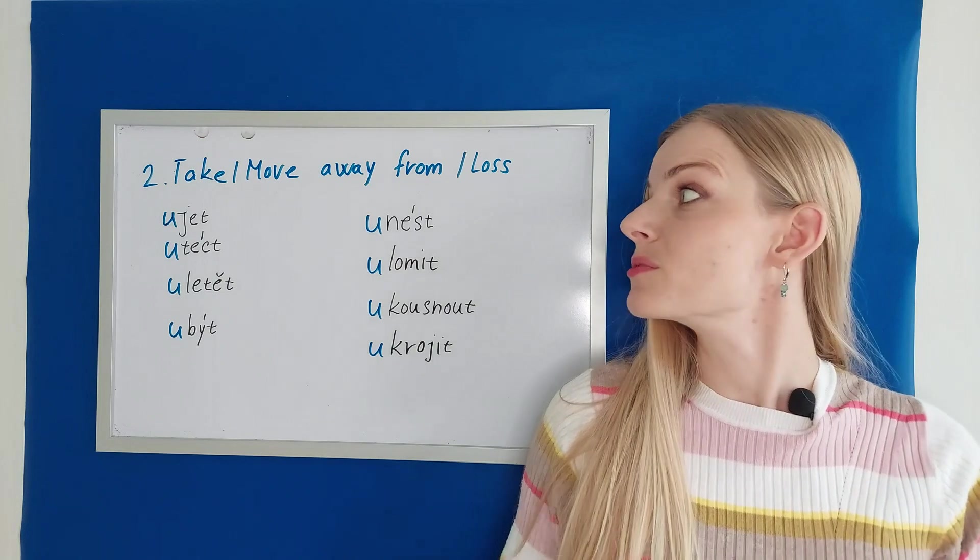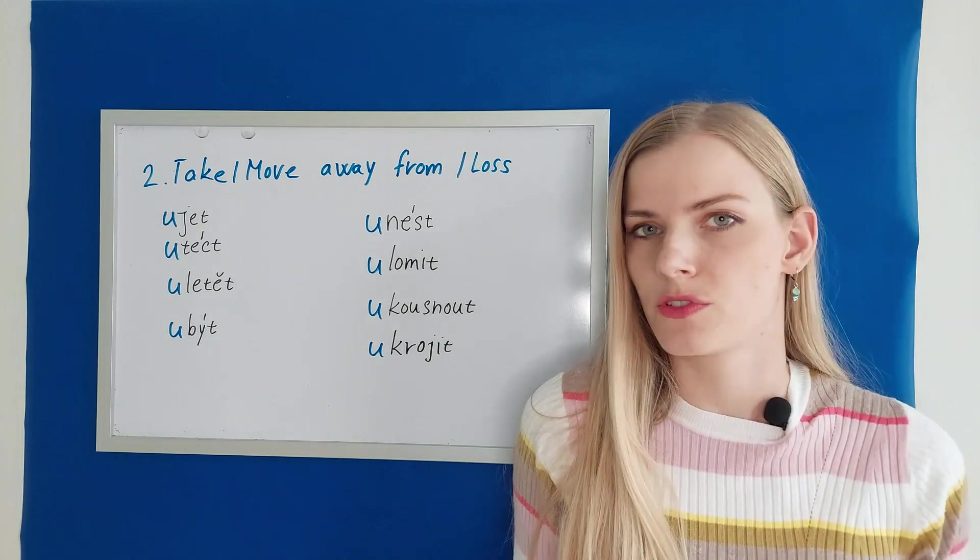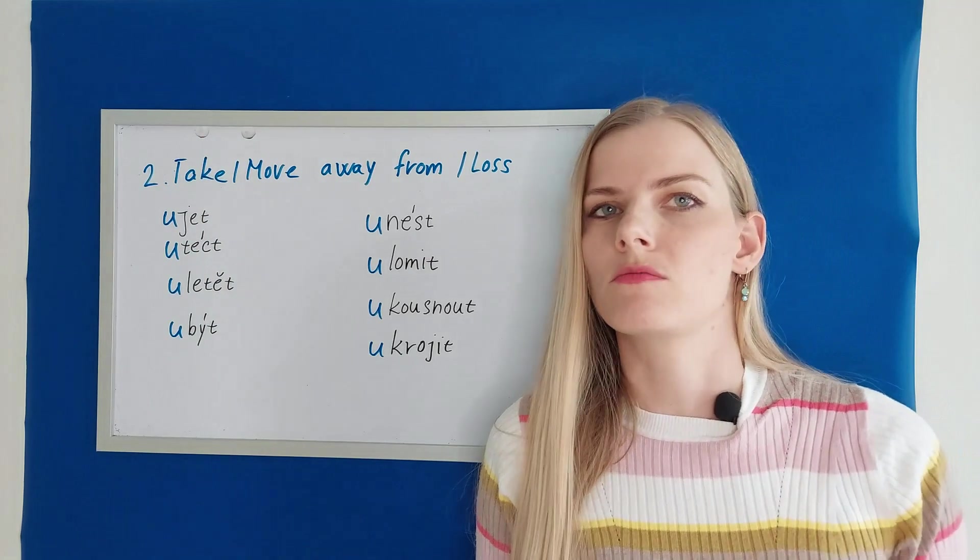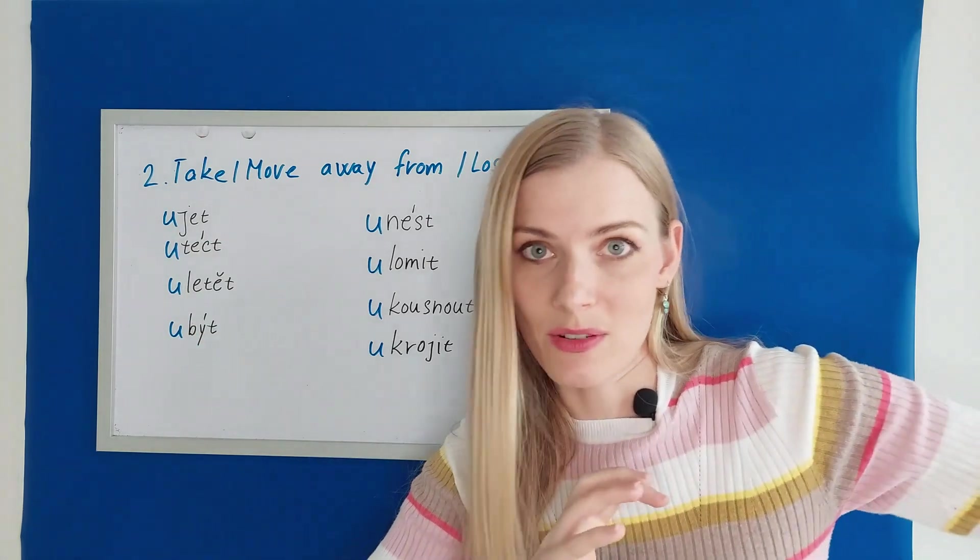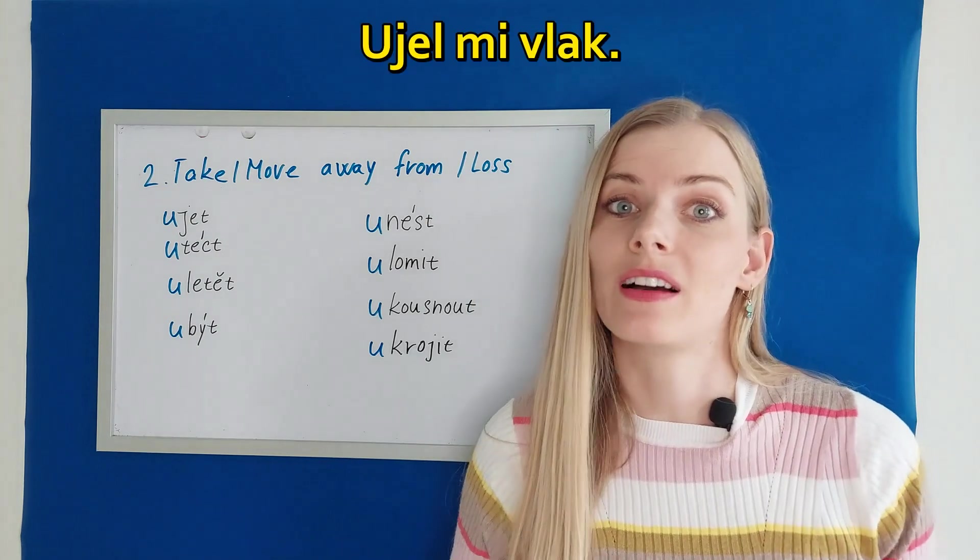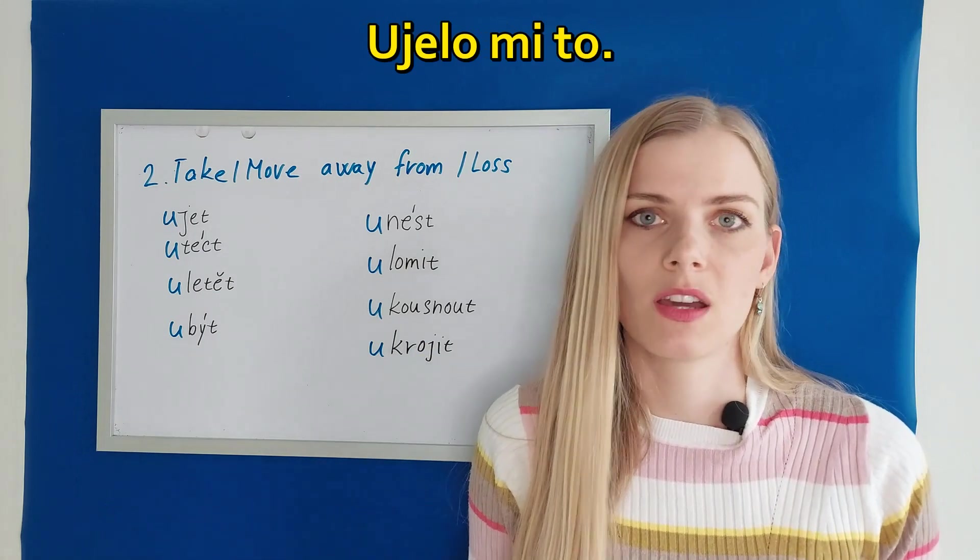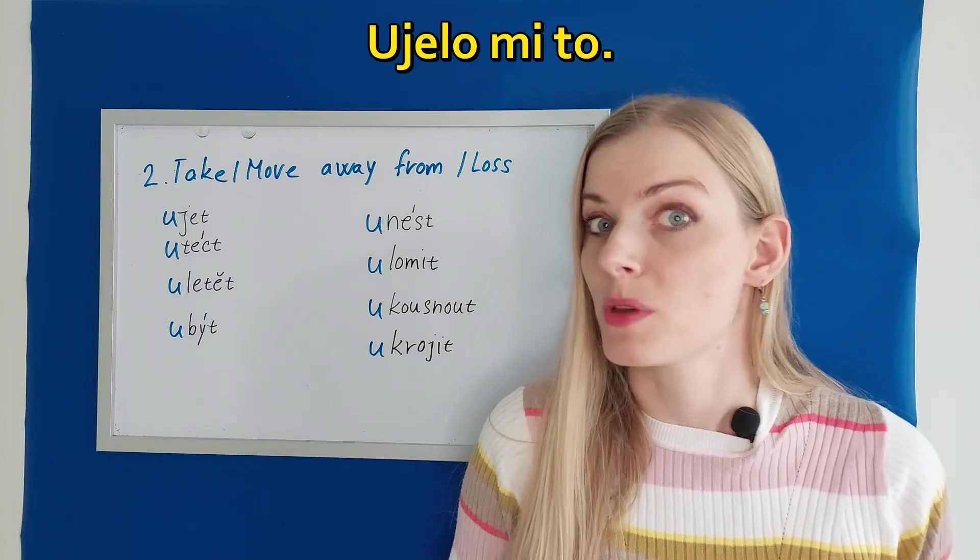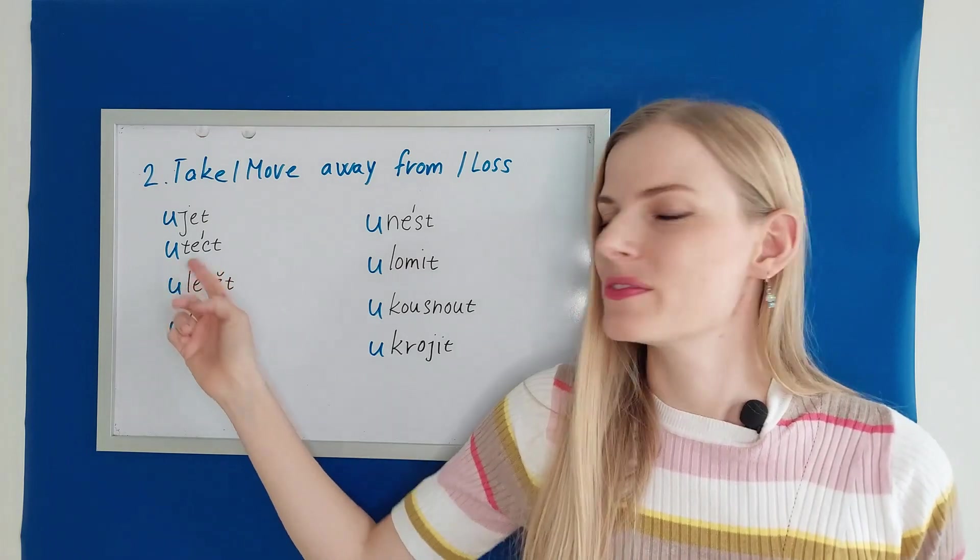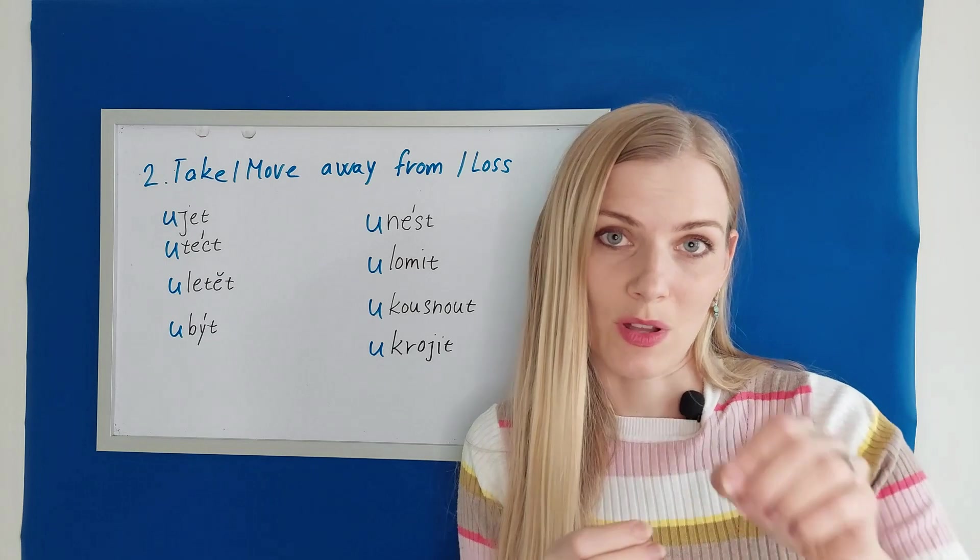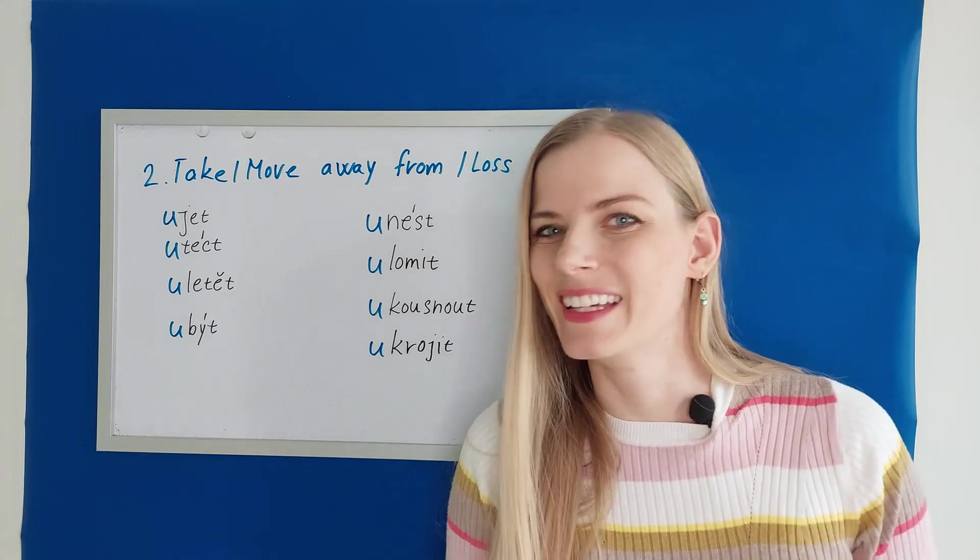Let's have a look at the second category, which talks about something moving away or being taken away. Or when we talk about a loss of something. Ujet means to get away. We talk about a vehicle. So remember the verb jet. Ujet is when we say that this vehicle got away from us. For example, I would say ujel mi vlak. I missed the train. The train got away from me. Ujelo mi to. Utéct means to run away. Utekl z domova. He ran away from home. By the way, we also use this verb when we are cooking something with water and then it spills. So utekla mi polévka. The soup spilled.